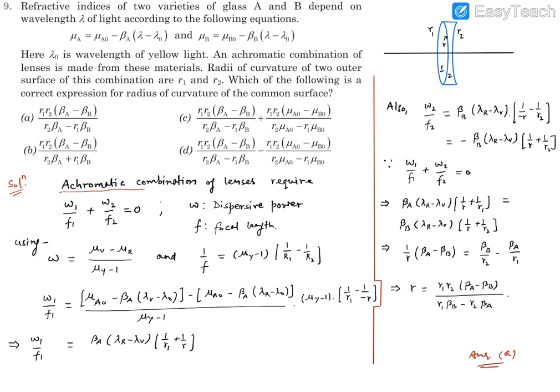There is a condition for achromatic combination of lenses. That condition is omega 1 over F1 plus omega 2 over F2 is equal to 0. So this can be remembered or this can be derived as well. So this condition we are going to use directly. I'm not going for derivation as of now.